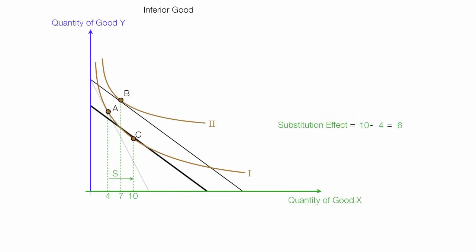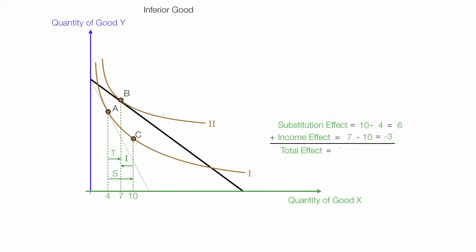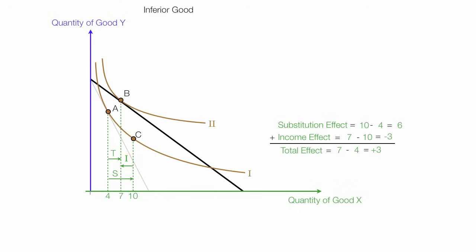I will put the budget line back where it belongs. The income effect is actually going the other way, and it's 7 minus 10 or negative 3, and I'll label that I, the income effect. The total effect is 7 minus 4 or plus 3. The price of X goes down, the quantity of X consumed by the substitution effect increases, and the quantity of X due to the income effect actually decreases. The total effect is going to be 6 plus a negative 3, or plus 3.